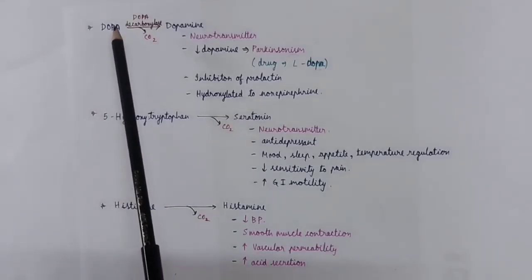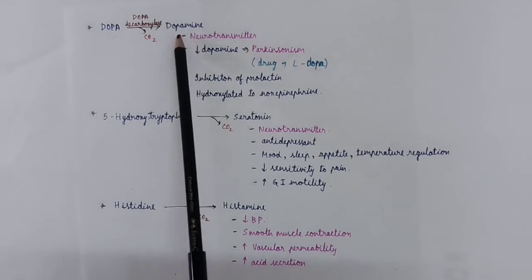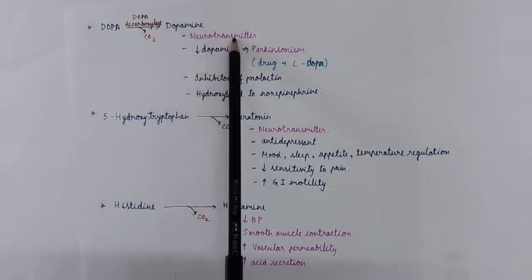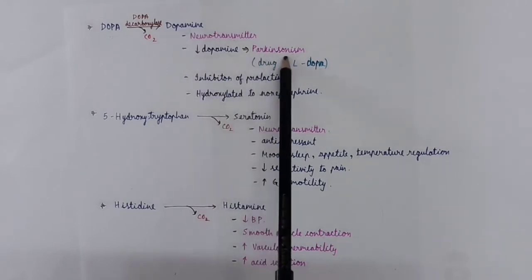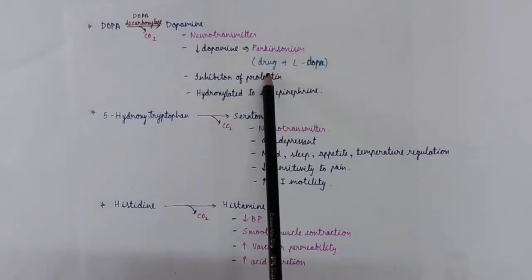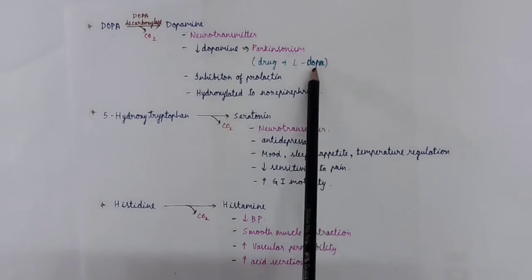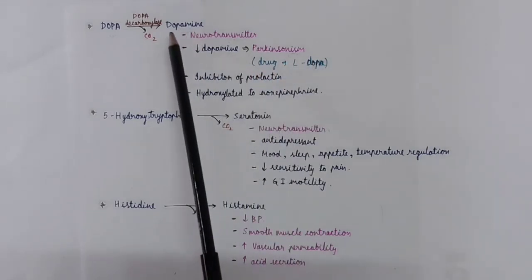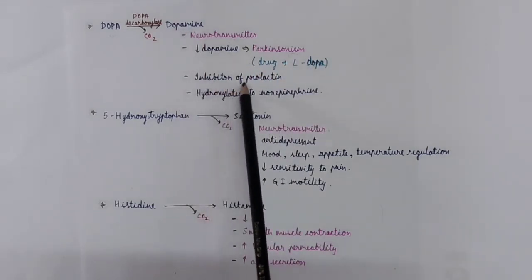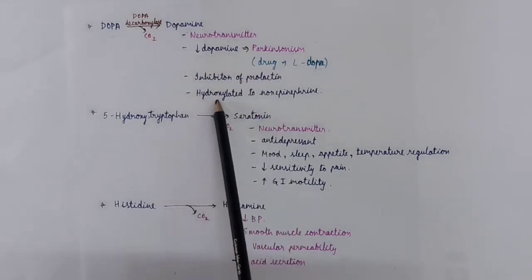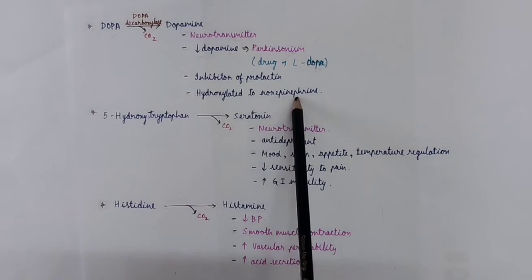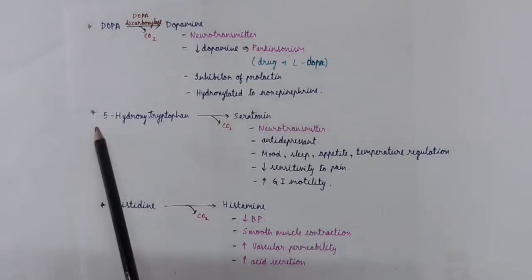Dopa is converted to dopamine. Dopamine is an important neurotransmitter. It is reduced in the case of Parkinson's disease, so we use the drug L-DOPA, which is a precursor. Dopamine is also an inhibitor of prolactin secretion. Dopamine is further hydroxylated to norepinephrine.